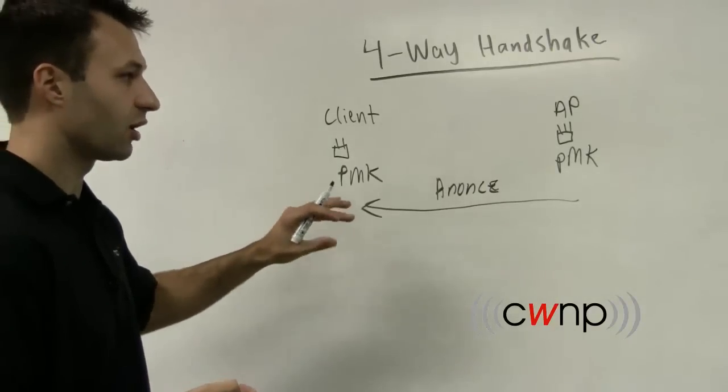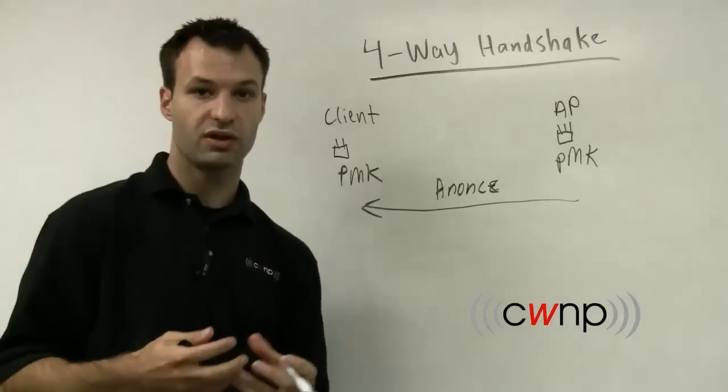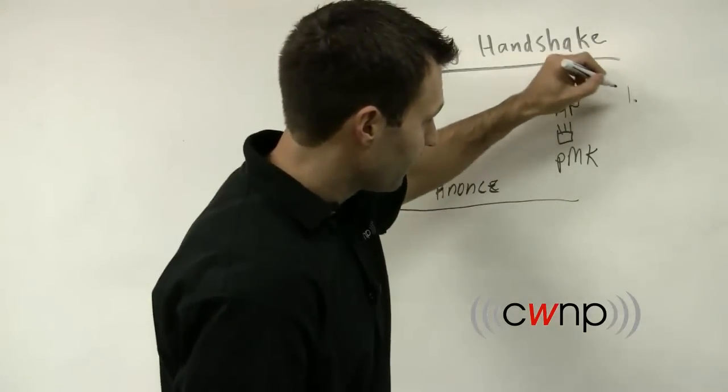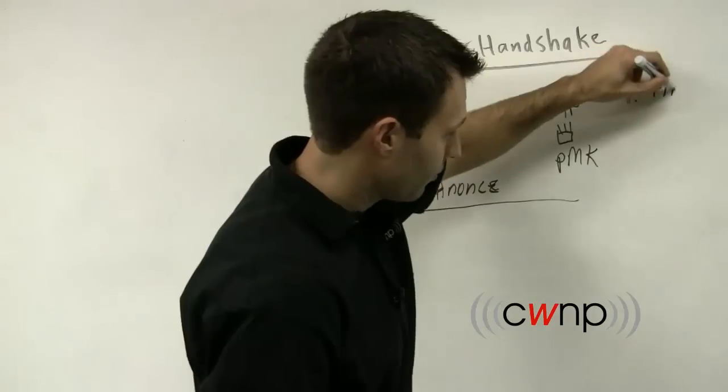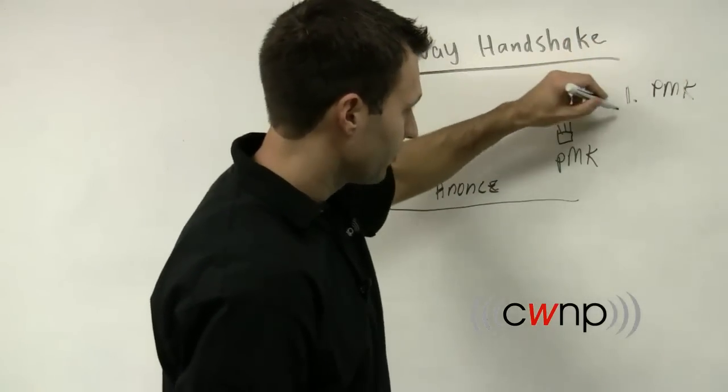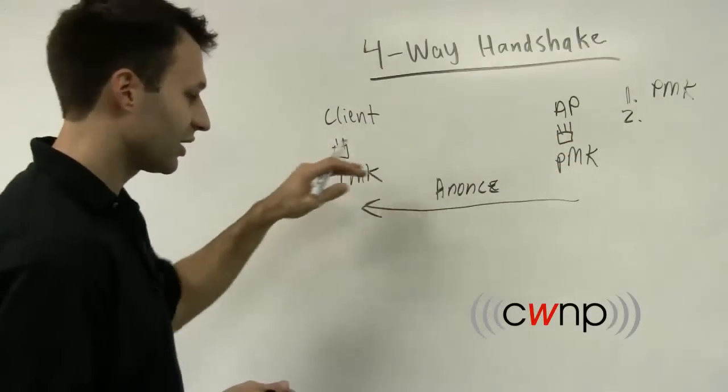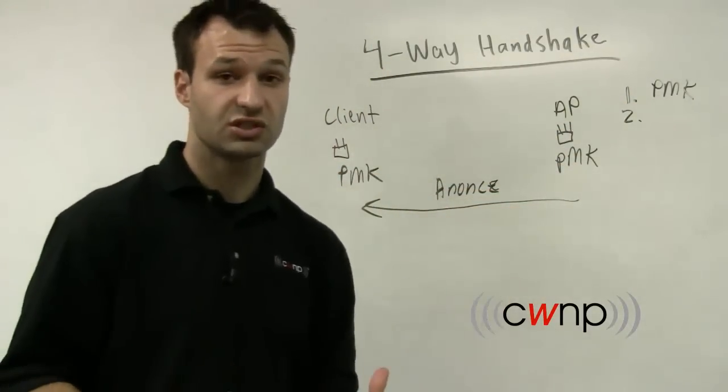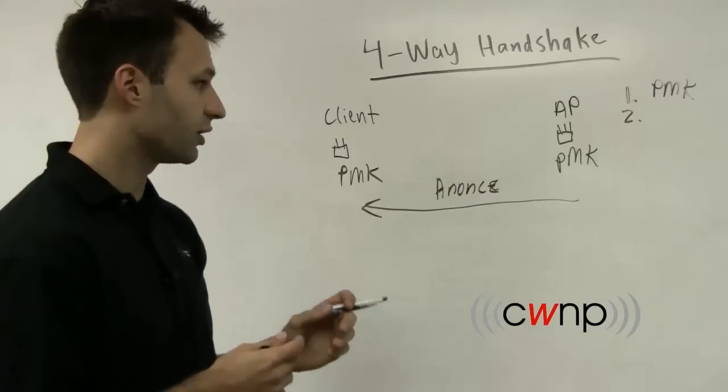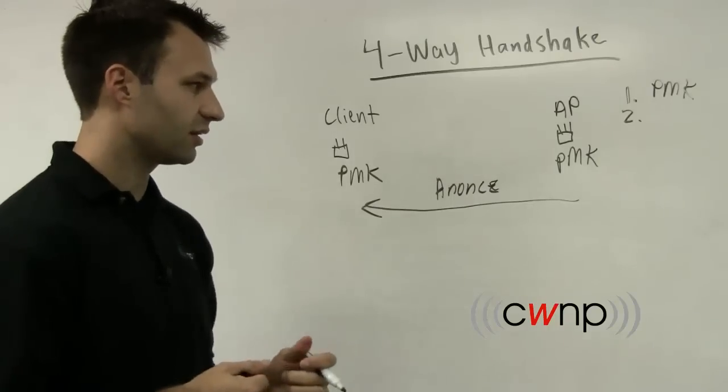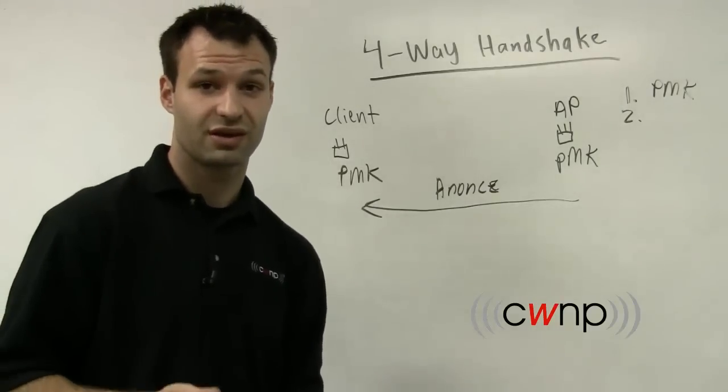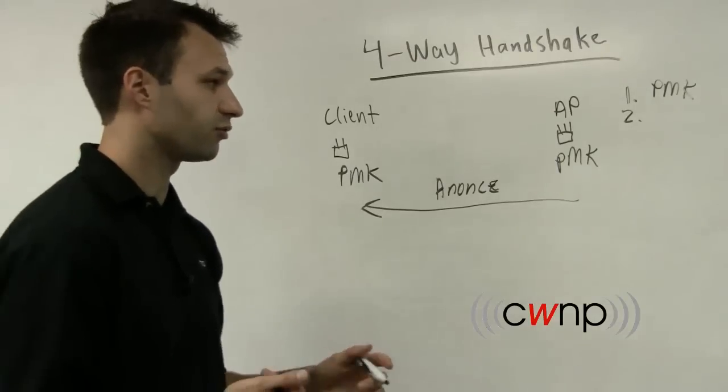Now, let me stop there and talk about all the inputs to the encryption keys. So the first input is the PMK, which we've already established. Both endpoints in this exchange have a PMK that was never transmitted across the wireless medium, which is an important note to make because it's considerably more secure considering that it's never across the wireless medium.